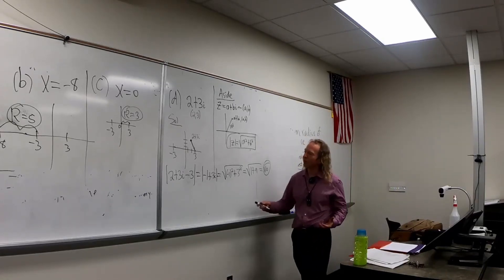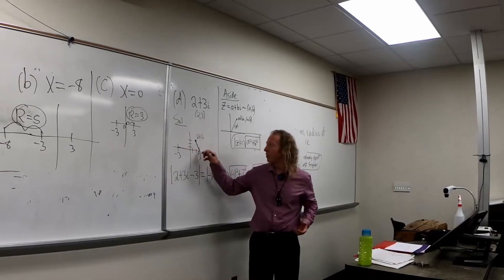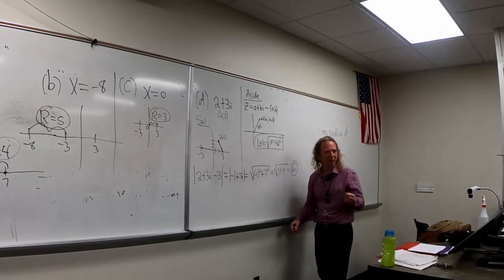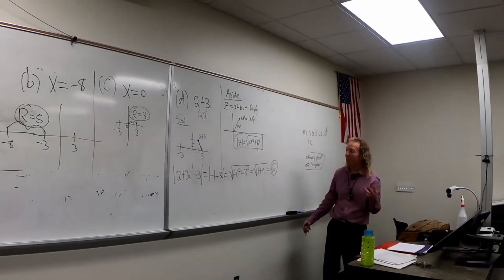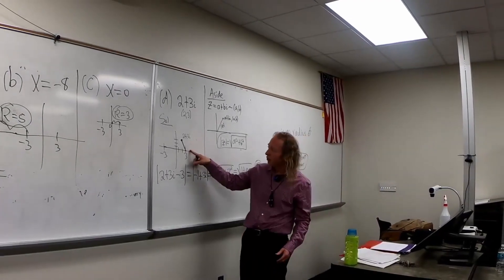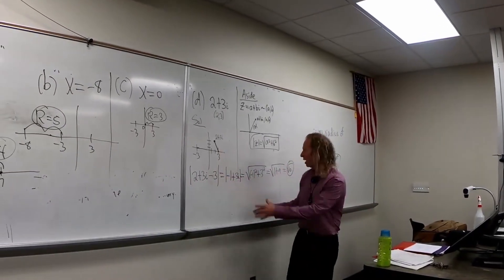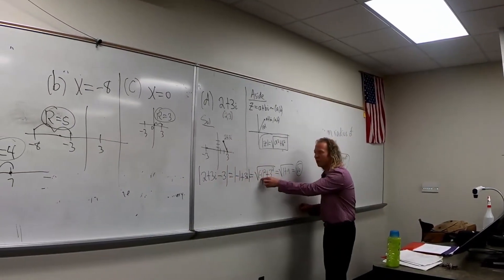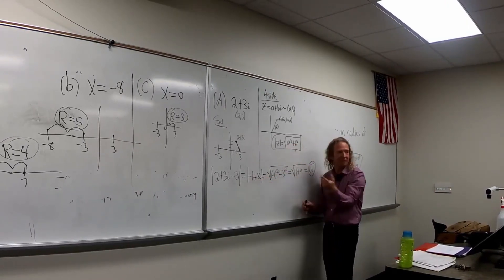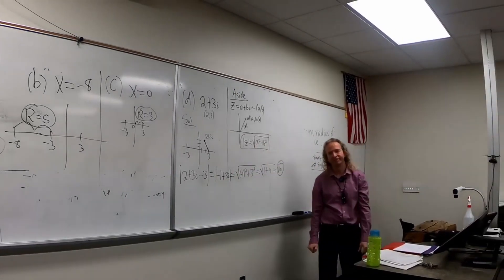So all you do is plot your singular points, plot your complex number — think of it as an ordered pair two comma three — look at the picture and say this one's closer, then subtract and use the modulus formula. R is root ten. That's your minimum radius of convergence.